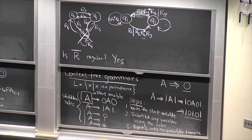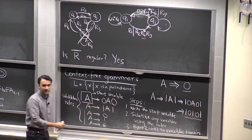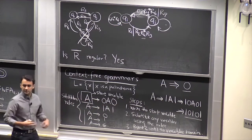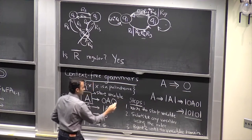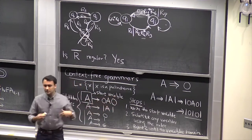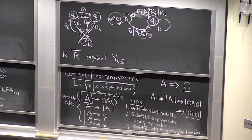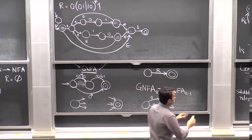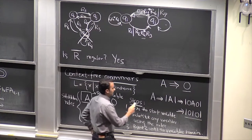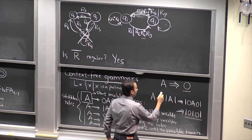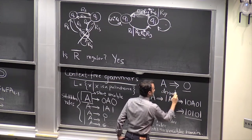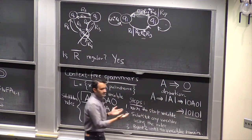Formally, a context-free grammar is defined as a 4-tuple: the set of variables V, the alphabet Σ, the set of substitution rules R, and the start variable S. In this palindrome example, the set of variables was just {A}, the alphabet was {0,1}, the rules were the five substitution rules, and the start variable was A. This whole procedure of writing down the start variable and making substitutions is called a derivation — you're said to have derived the string from this context-free grammar.